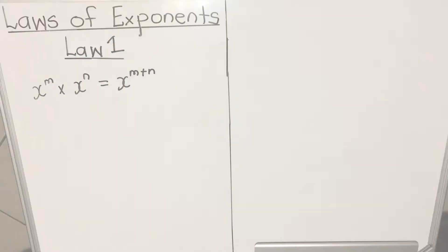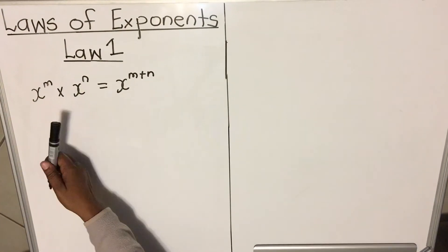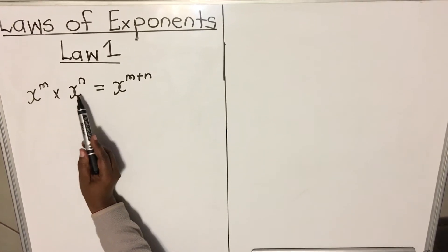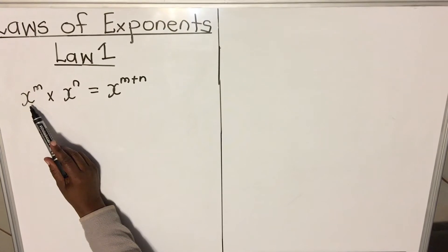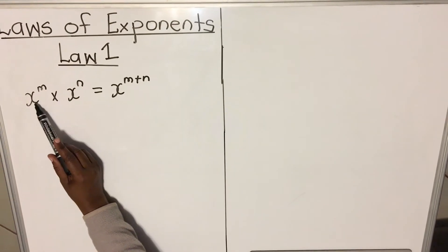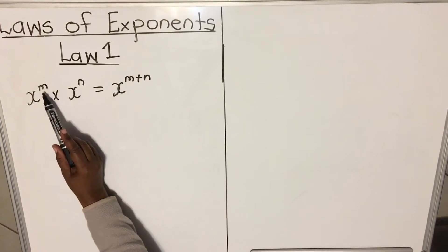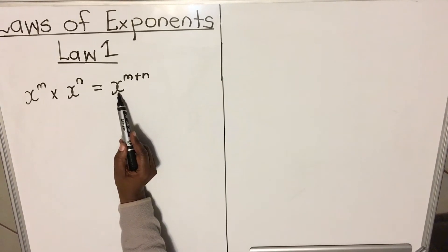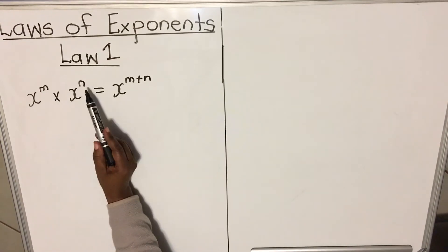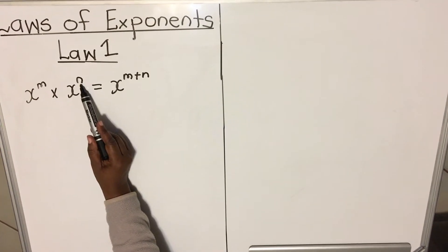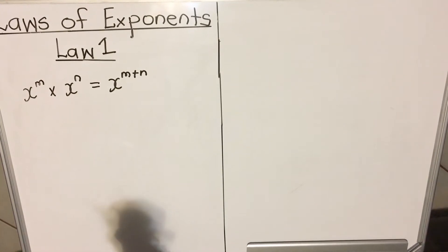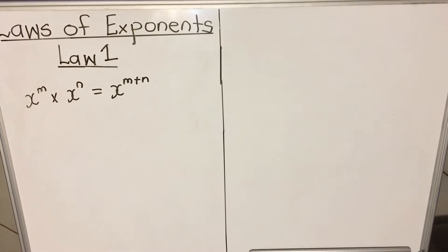The first law says: when you multiply the same base — this bigger number must be the same — and you are multiplying, you add the exponents. So the base stays the same as x, and the exponents add: if this was exponent m and this was exponent n, you add them to get m plus n.